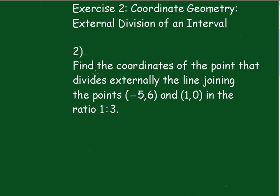Right, number 2. Find the coordinates of the point that divides externally the line joining the points (-5, 6) and (1, 0) in the ratio 1 to 3. Okay, then pause the video.